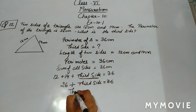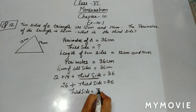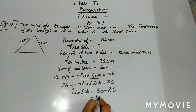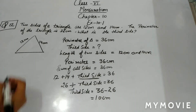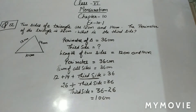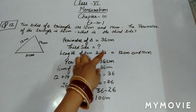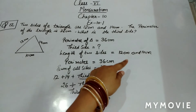So, third side equals 36 minus 26, which gives us 10 cm. So 10 cm is your third side. You can also think of it this way: whenever you have the perimeter given and the lengths of two sides given, add the two sides and subtract from the perimeter to get the third side.